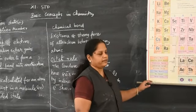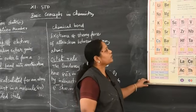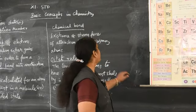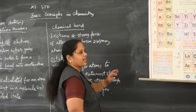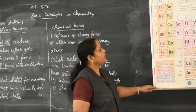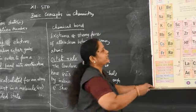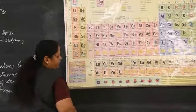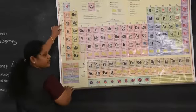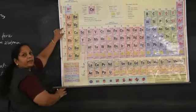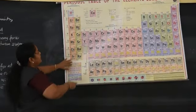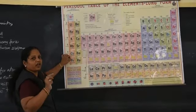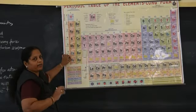Good morning boys. Today I am going to discuss basic concepts in chemistry. This is the modern periodic table, which is based on the modern periodic law. The elements are arranged in increasing order of their atomic number.